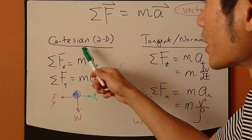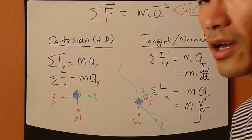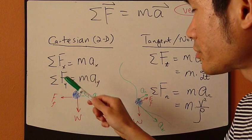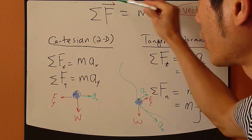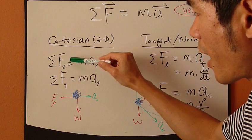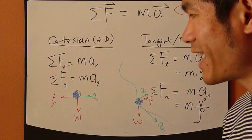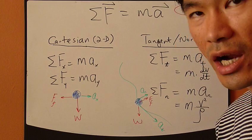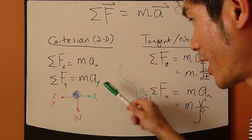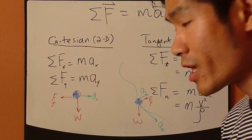For example, in Cartesian coordinate system, 2D case, x and y. So you write the scalar form of this second law equation into x and y components and then you solve for these equations in each of the directions.